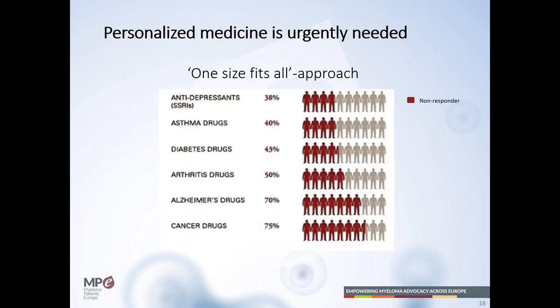Currently, we still treat patients with the same therapy. In the Netherlands and most other countries, VTD — bortezomib, thalidomide, dexamethasone — is the induction therapy for younger patients eligible for high-dose myeloma and stem cell transplantation. We give every patient essentially the same treatment. That doesn't help every patient, and most of the time we do not really know what was different about one patient versus another.